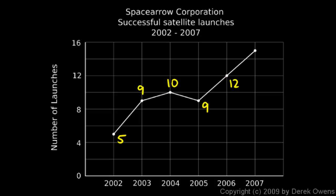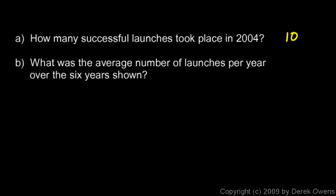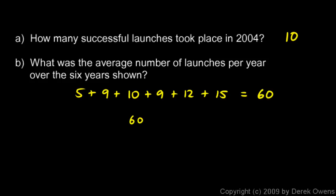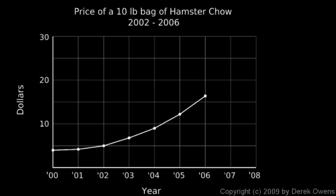Following the line over, we can see 12, and then 15. So we need to average those numbers: 5 plus 9 plus 10 plus 9 plus 12 plus 15. You can use a calculator or add by hand — they add up to 60. The average is 60 divided by 6, which is 10. So over the six years shown, they averaged ten successful launches per year.